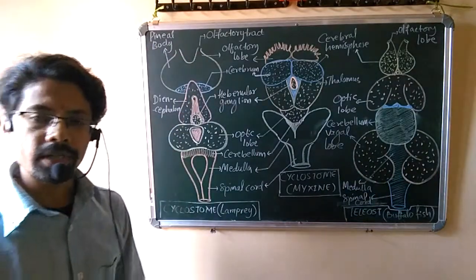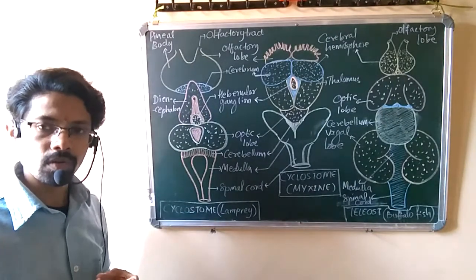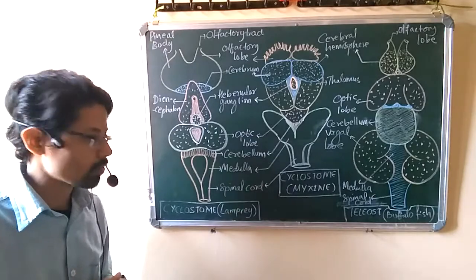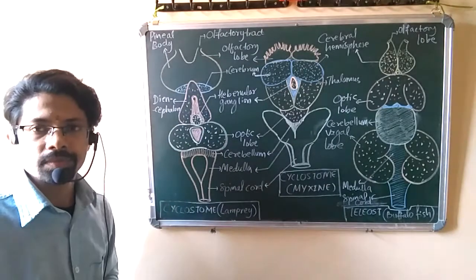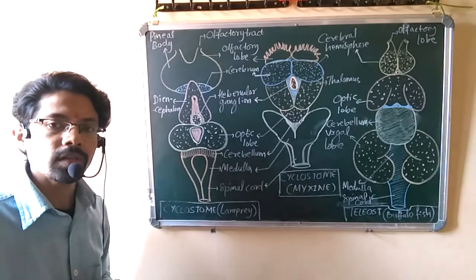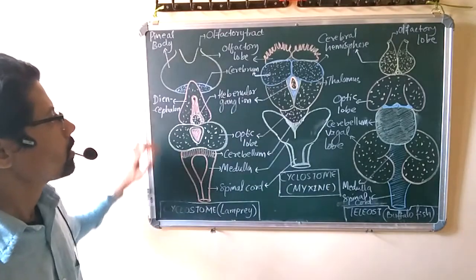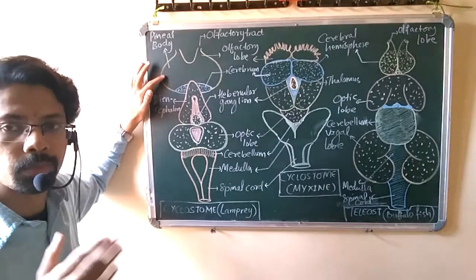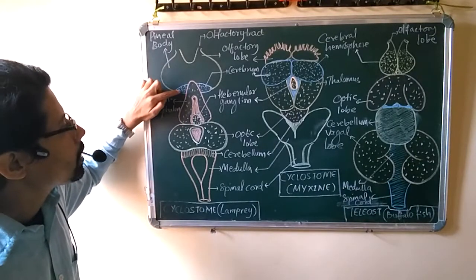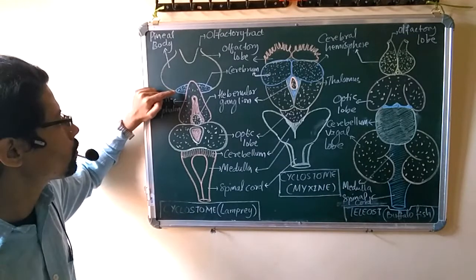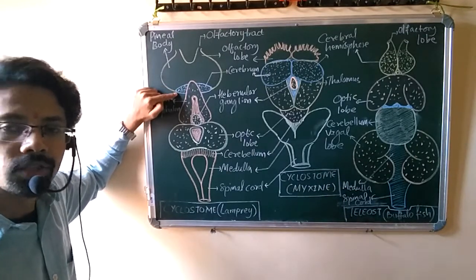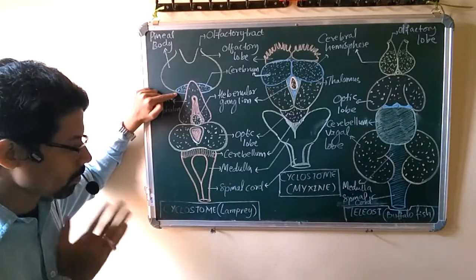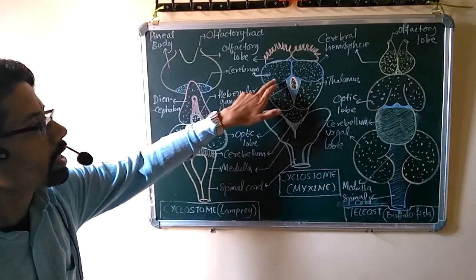The larger structure you see is the pineal body. The pineal body is a very large structure in primitive chordates, whereas it is absent in other cyclostomes like myxine. This is a very important point to remember — the pineal body is larger in the primitive cyclostome lamprey (scientific name Petromyzon). The cerebral hemispheres, shown in blue, are very small lobes in these primitive chordates, especially in lamprey, whereas the cerebral structures are more developed in myxine.